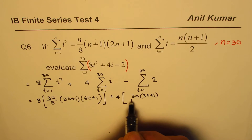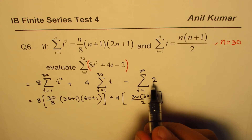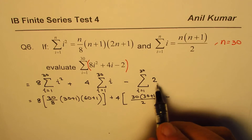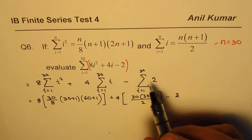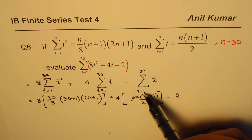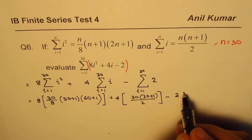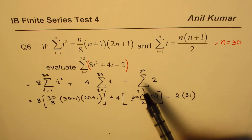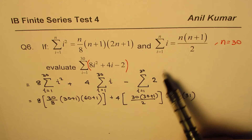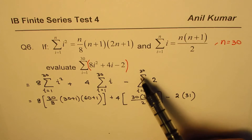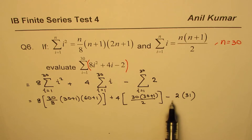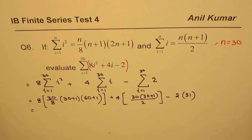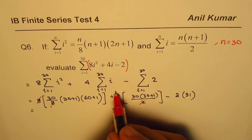For the constant term: we have minus 2 repeated. How many times does 2 appear? If i goes from 1 to 30, the number of terms is 30, so it is 2 times 30, which is 60. Wait — actually there are 31 values from 1 to 30... so that makes a difference. There are 31 twos, so it is 2 times 31.